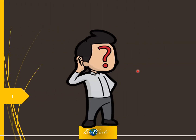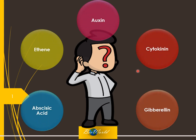Have you ever asked yourself why we study plant hormones? After all, we're not plants. Well, there's a reason. This is Vickness from BioWorld and I'm going to tell you why. In the past few videos we've been learning about hormones like auxin, cytokinin, gibberellin, abscisic acid and ethylene. One reason is of course because it's part of our syllabus, but there is a bigger reason.